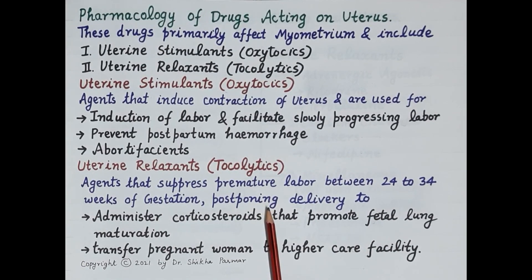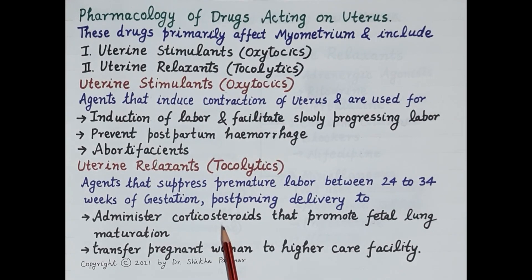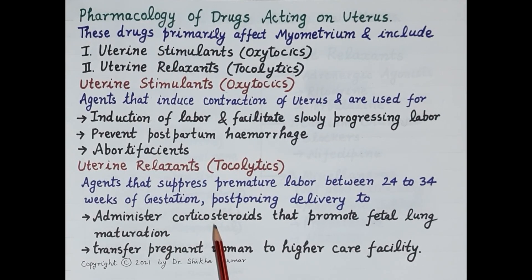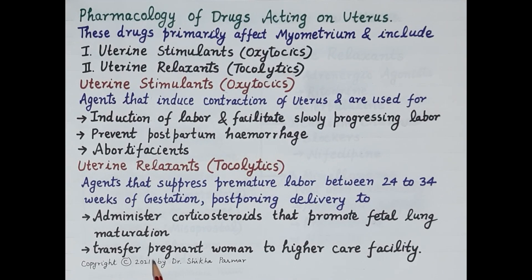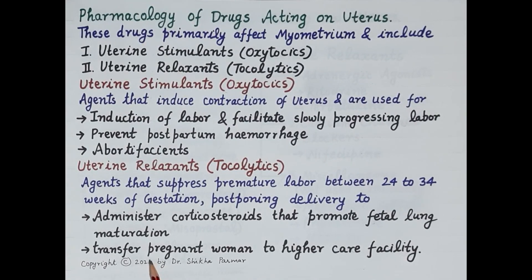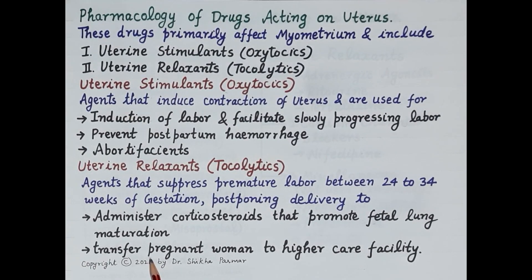Postponing delivery is required, for example, when the lungs of the baby are not mature — the delivery is postponed in order to administer corticosteroids, which promote fetal lung maturation. Apart from this, when a pregnant woman needs to be transferred to a higher care facility, tocolytics are administered to postpone labor.